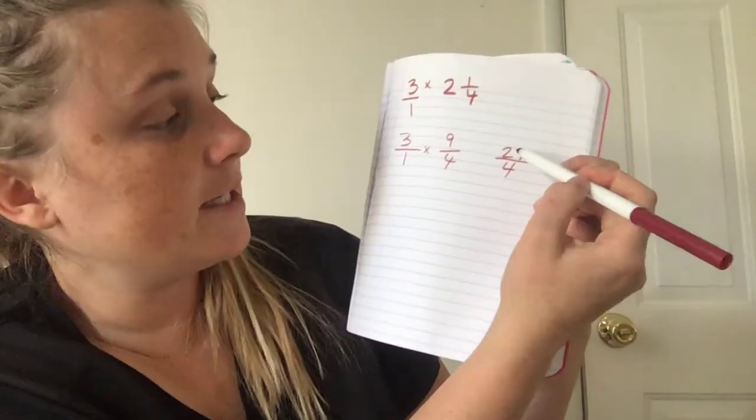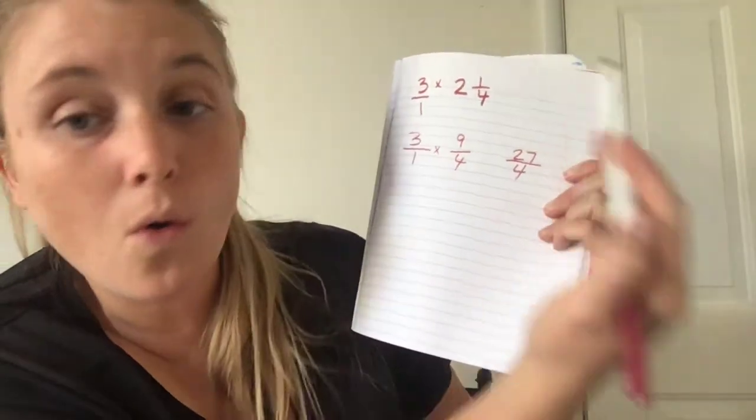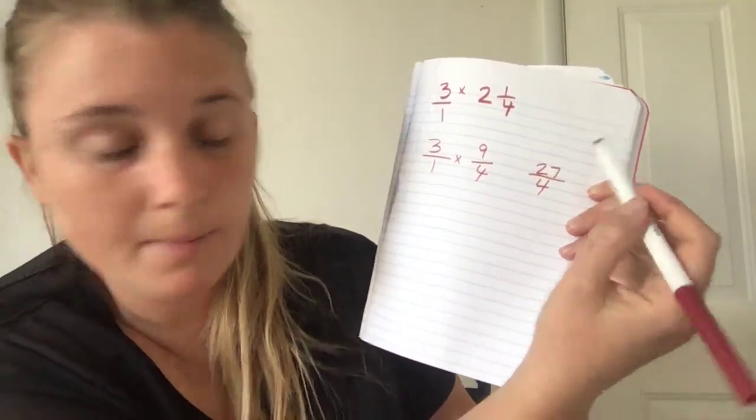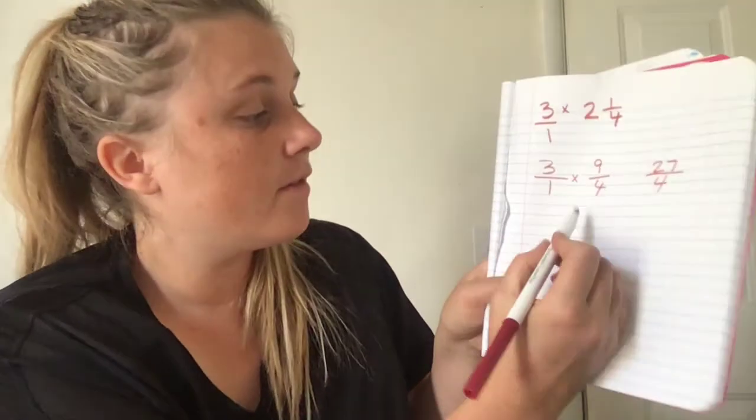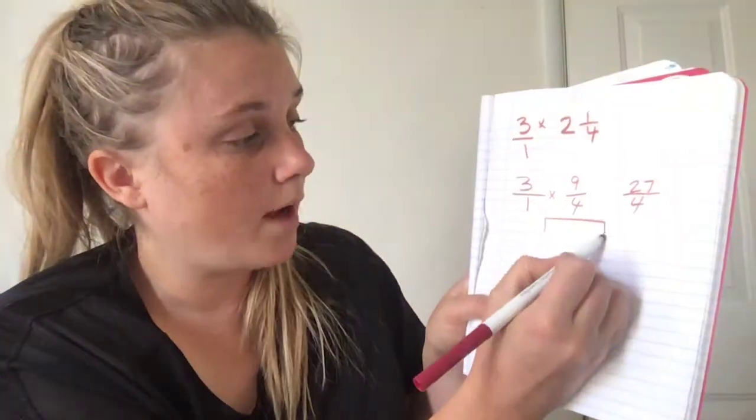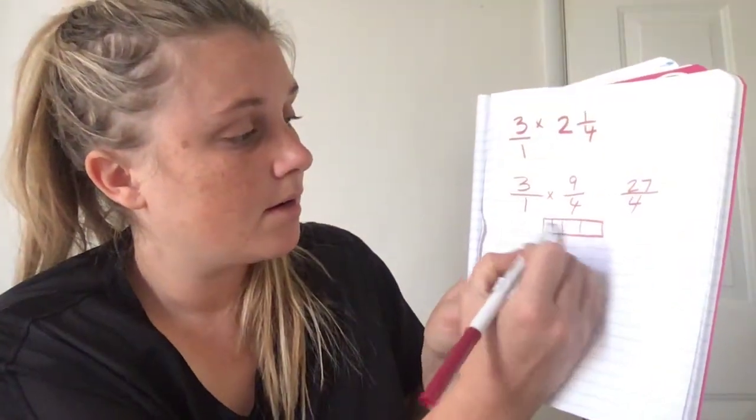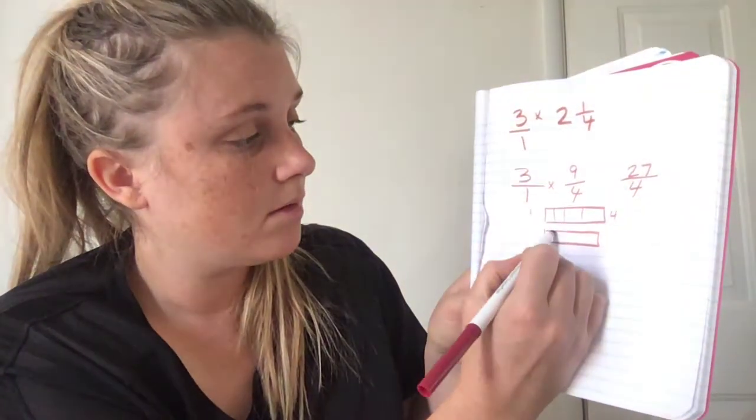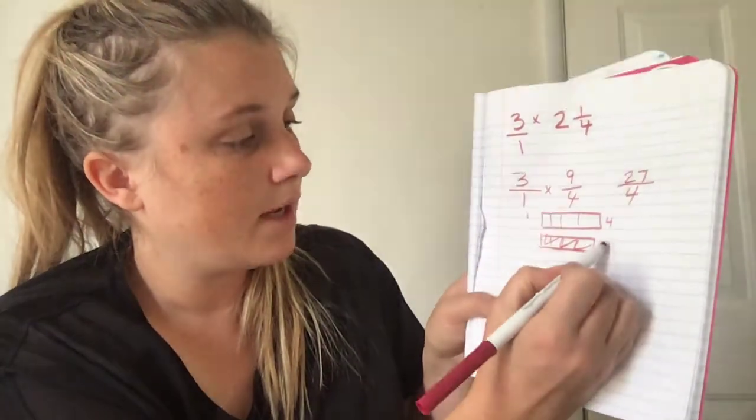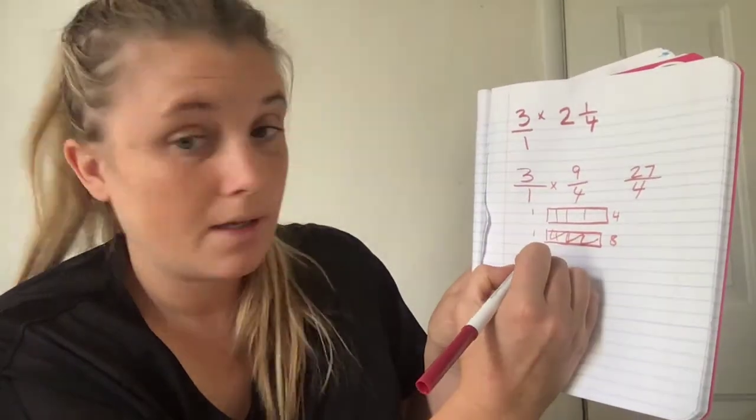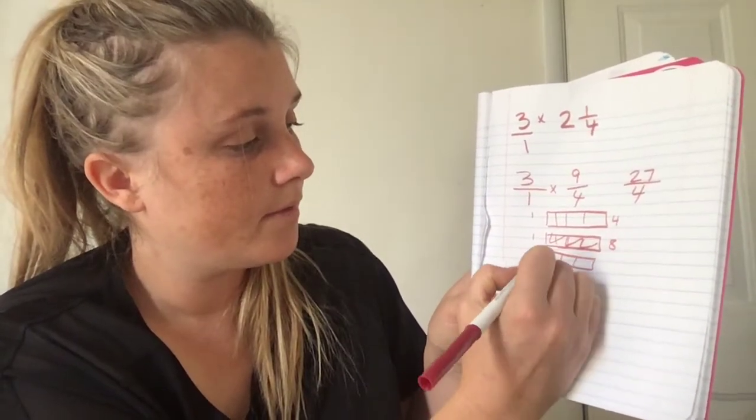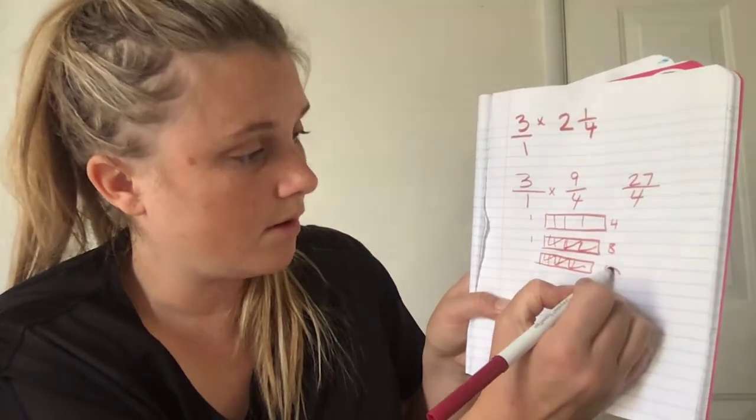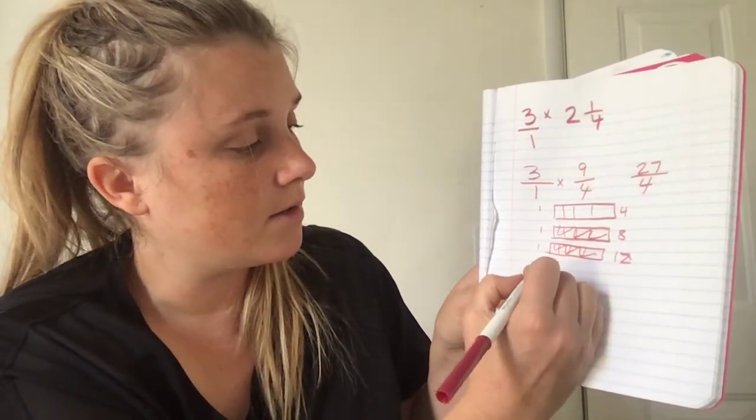So, if I have twenty-seven fourths, how many holes do I have? How many holes of the fourths do I have? So, here's one. Here's a hole with four. Here's a hole. Eight. Here's a hole. Twelve. Oh, twelve. Here's a hole.